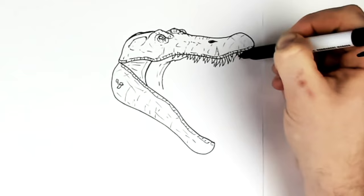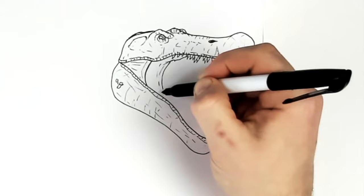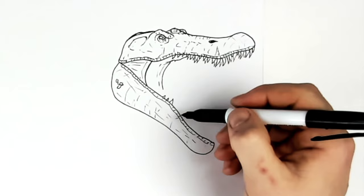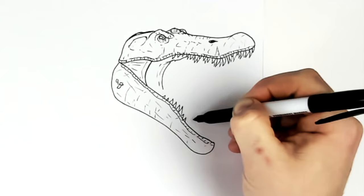Right, kind of like that. And then teeth down here, starting real small again. They don't get too big down here. They don't get too big at the front.